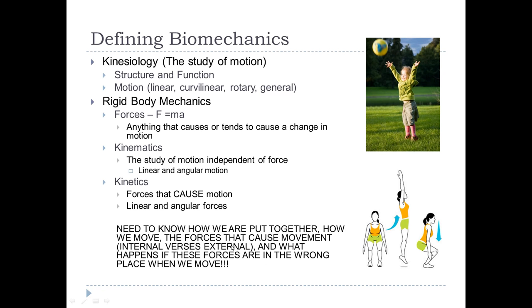External forces are anything outside the body — it could be gravity, air, water, or an external load like a barbell or dumbbell. We also have to look at what happens if these forces are in the wrong place when we move. If everything's not aligned up accordingly, the internal forces will pull incorrectly on the bone, cause distress to the connective tissue, create an improper movement pattern, which could cause compensations and lead to injury. That's why this is so important.